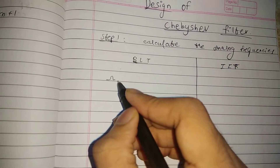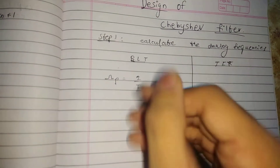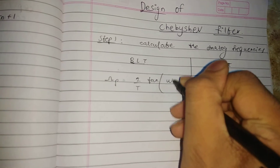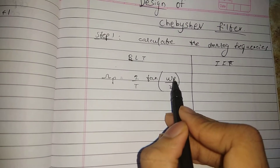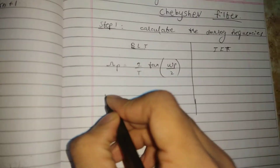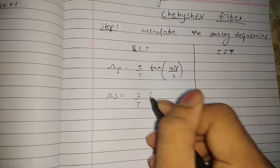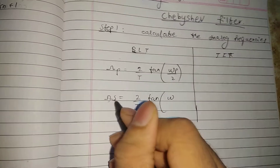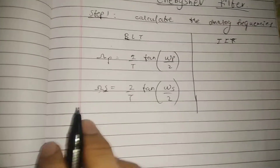For bilinear transformation, omega_p (analog) is equal to 2/T multiplied by tan(omega_p / 2), where omega represents the digital frequency that will be given to you in the question paper. Similarly, omega_s (analog) is equal to 2/T multiplied by tan(omega_s / 2).